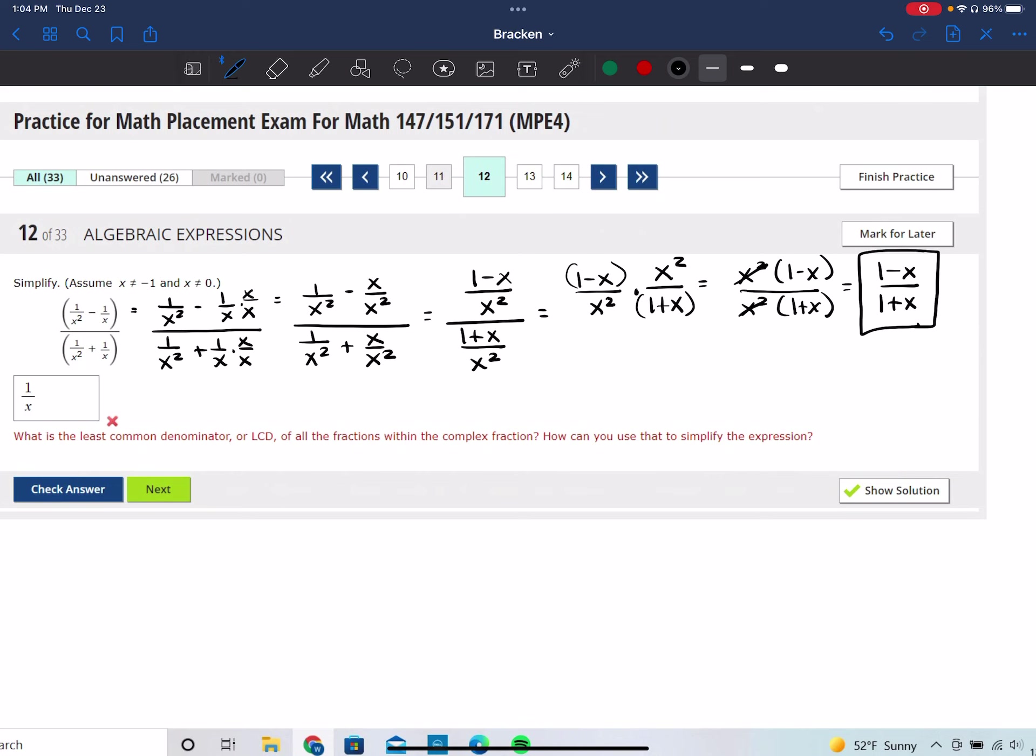That also tells you, you kind of also know you've done it right because it assumes that X cannot equal negative 1 because if it did, you would be getting 0 in the denominator in your answer. So that kind of tells you that denominator is correct in the answer. And then it also tells you X cannot equal 0, which makes sense because you couldn't have 0 down here or you would get undefined. So the correct answer should be, I believe, 1 minus X over 1 plus X.